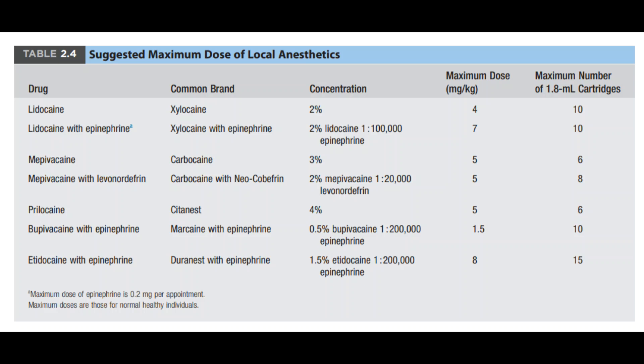For example, looking at lidocaine: the maximum dose is 4 mg per kg. If a patient weighs 100 kg, the maximum dose is 400 mg of lidocaine. A standard cartridge of local anesthetic is 1.8 mL, and at a 2% lidocaine concentration, that equals 36 mg per cartridge.